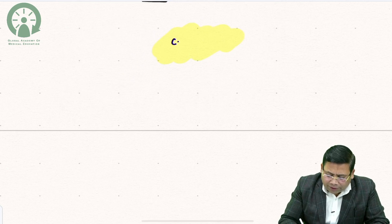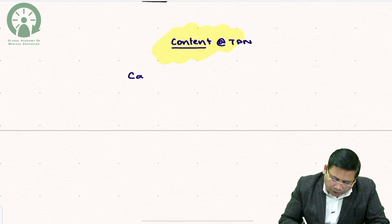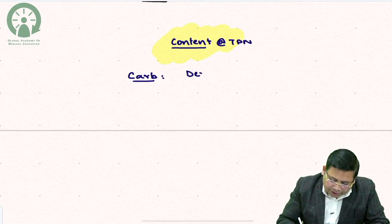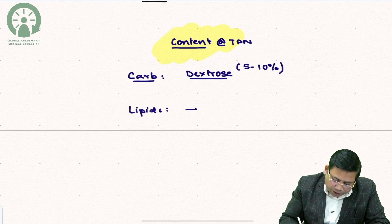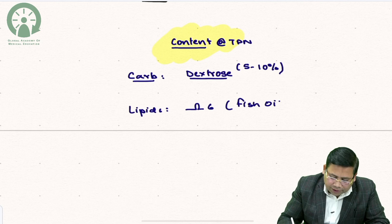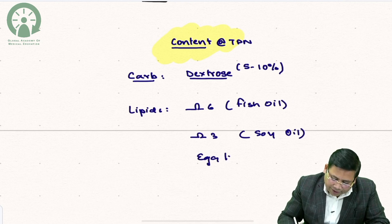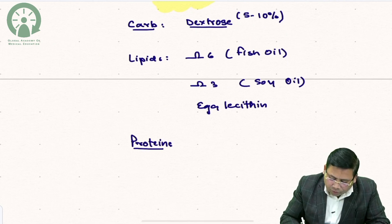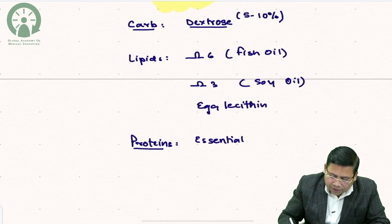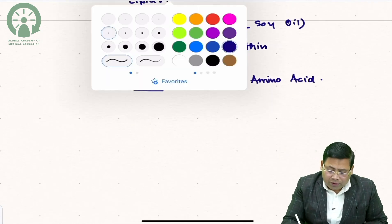Regarding the content of TPN: the carbohydrate of choice is dextrose — 5 to 10% dextrose is given. Lipids are given as omega-6 fatty acids in the form of fish oil and omega-3 fatty acids in the form of soy oil; egg lecithin is also present. Proteins are provided in the form of essential amino acids.